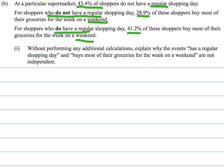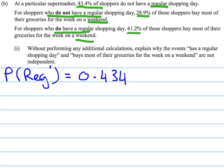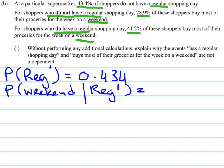Let's look at what we've been given. The probability that a shopper does not have a regular shopping day is 0.43. Then, as a conditional, the probability of buying groceries on a weekend given that they do not have a regular shopping day is equal to 0.289.